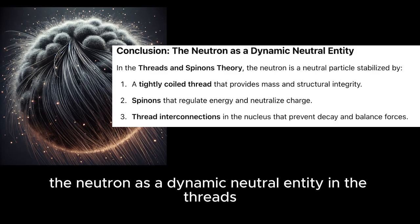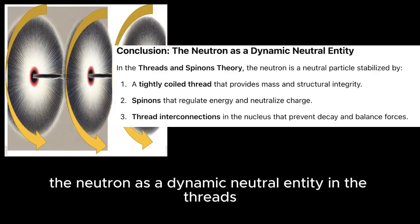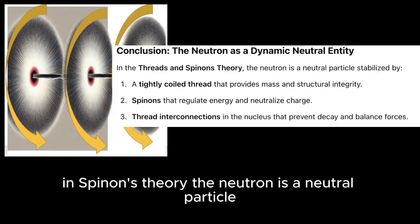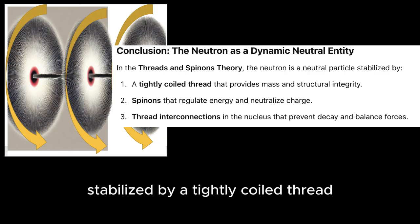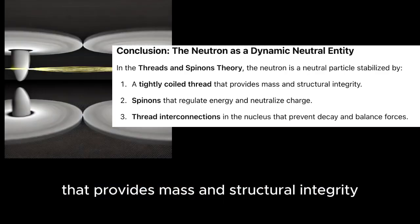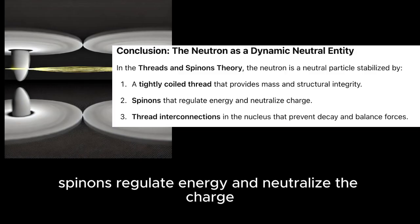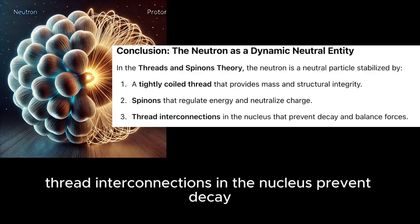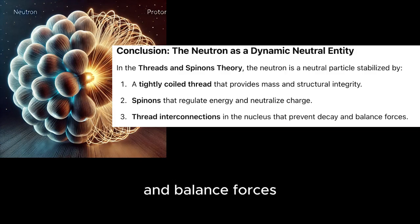Conclusion: The neutron as a dynamic neutral entity. In the threads and spinons theory, the neutron is a neutral particle stabilized by a tightly coiled thread that provides mass and structural integrity. Spinons regulate energy and neutralize the charge. Thread interconnections in the nucleus prevent decay and balance forces.